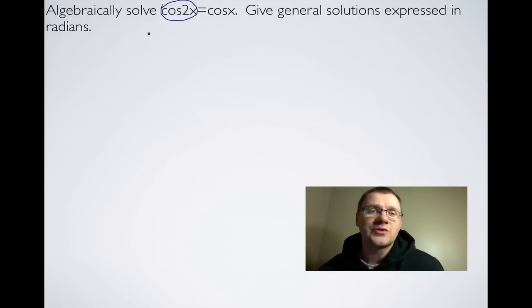And so that substitution would be 2cos²x. So you have to remember that for cos2x, if you don't have these written down, you should have three different identities for cos2x. So we've got 2cos²x - 1 is the same as cos2x and that equals cosx.